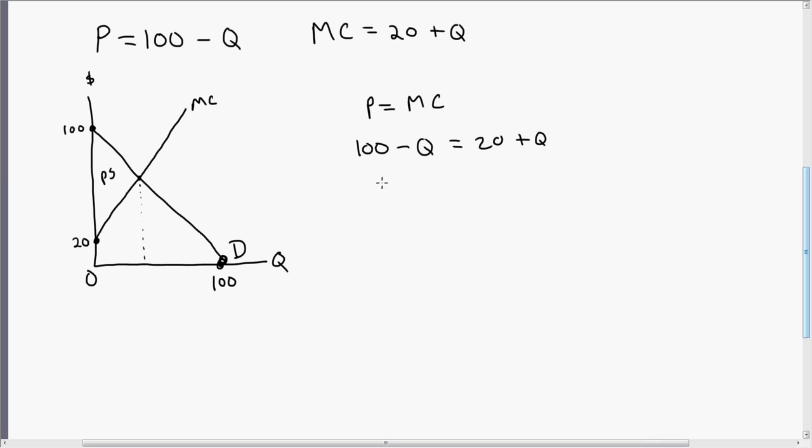So subtracting 20 from both sides, and then adding Q to both sides. Q equals 40. Plug that 40 right here. Now we've got all the dimensions we need to calculate producer surplus.